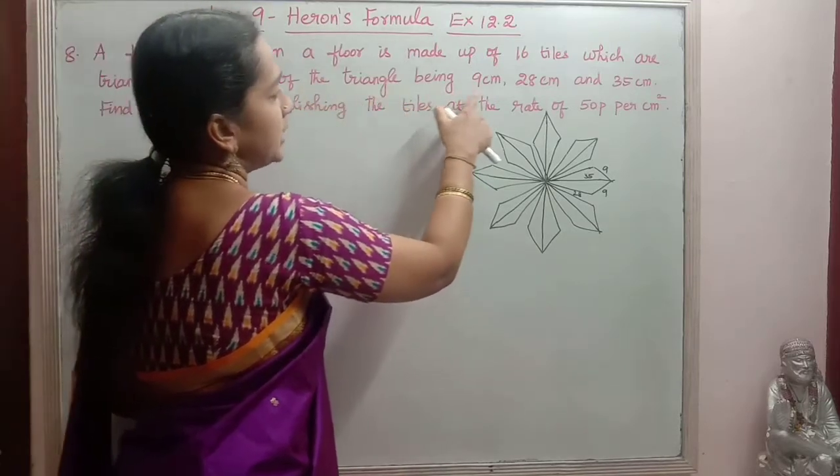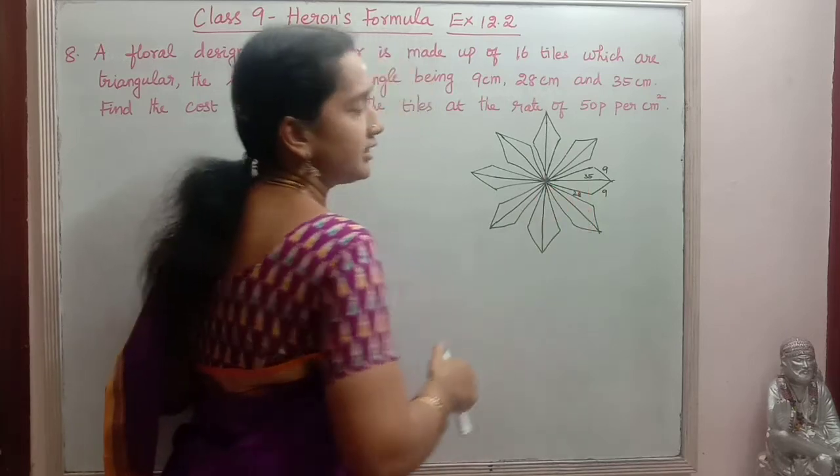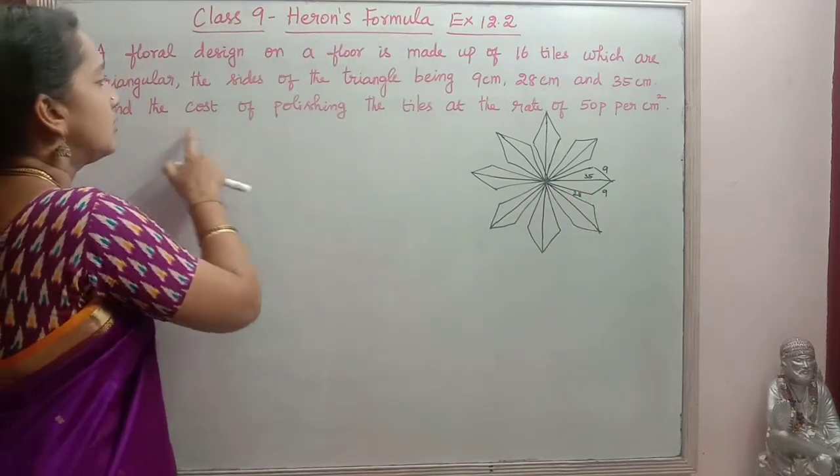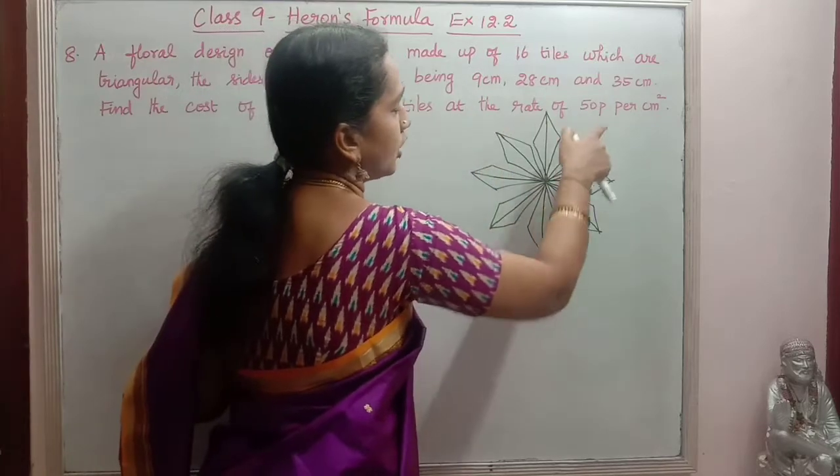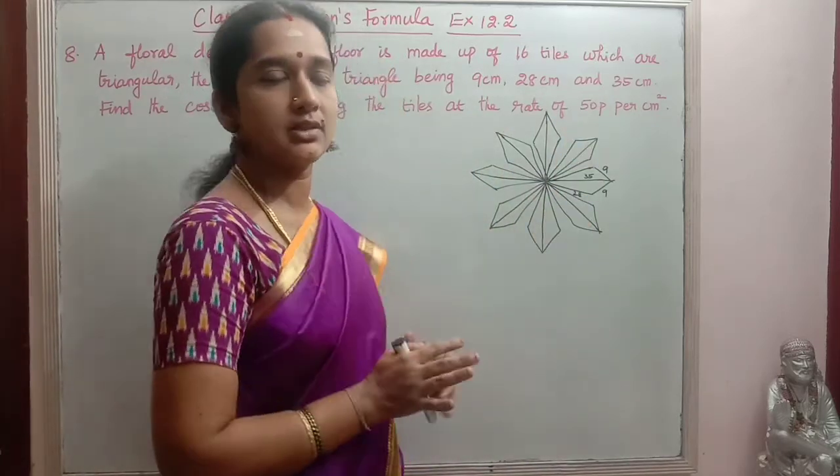The size of the triangle being 9 cm, 28 cm and 35 cm. Find the cost of polishing the tiles at the rate of 50 paise per cm square. So this is the question given.